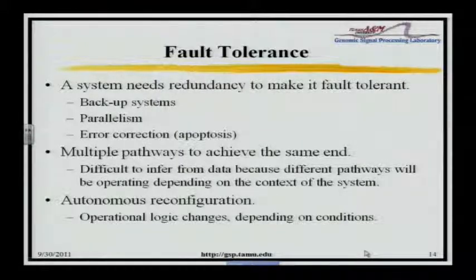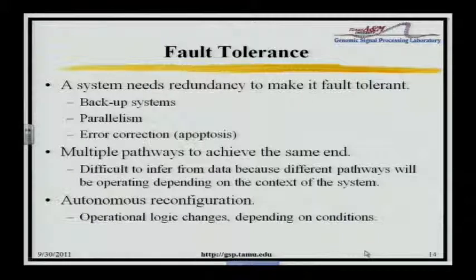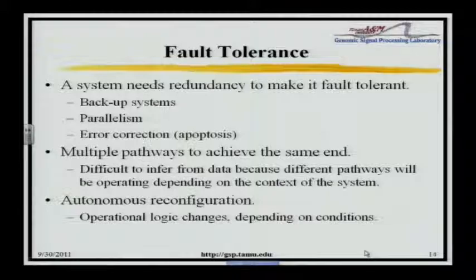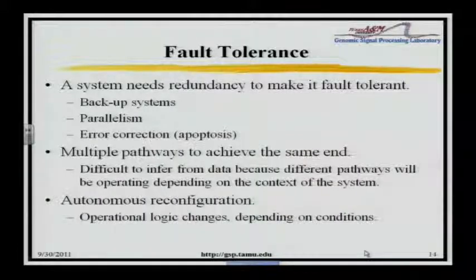High-throughput methods that measure expression don't do careful experimental design — they just take data collected from various patients. There's no effort to achieve experimental design to figure out what's going on with these pathways. That data is essentially useless. There's also autonomous reconfiguration — the operational logic changes depending on condition. This is a very smart computer system. Cells are intelligent in this regard: they can reconfigure. You knock out a gene, and the cell goes on as if you didn't do anything — it reconfigures itself to carry out all its functions. A smart factory can do this too, maybe with slight loss of efficiency, but often hardly noticeable.